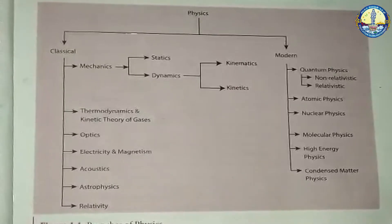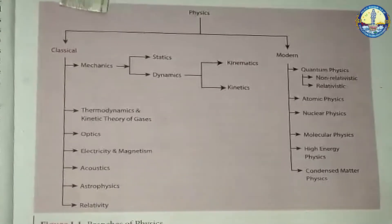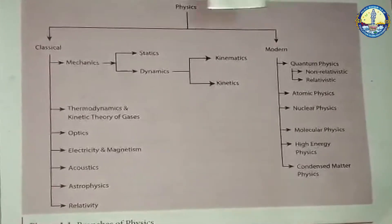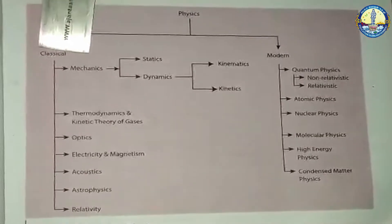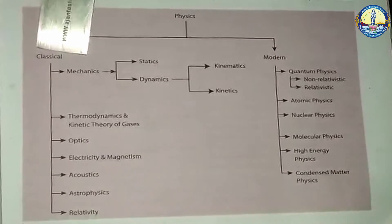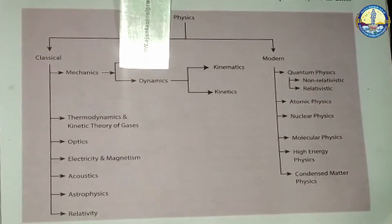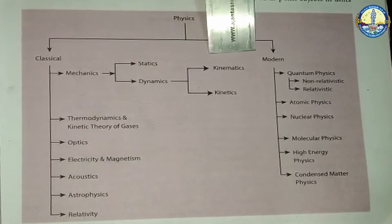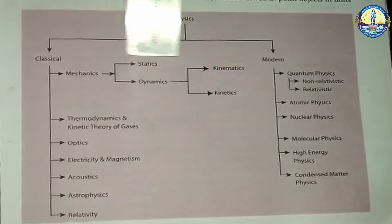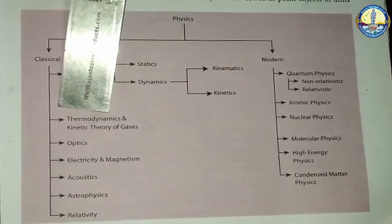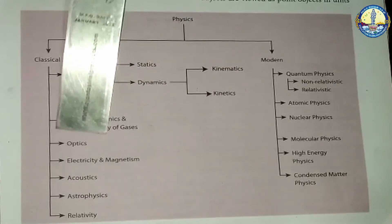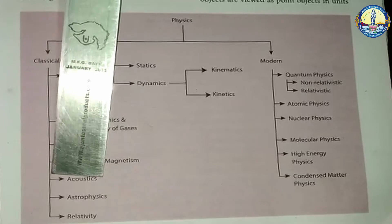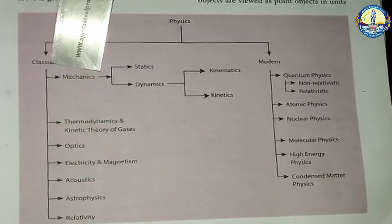The branches of physics are classified into classical and modern physics. Classical physics includes mechanics — which has statics, dynamics, and kinetics — as well as thermodynamics and kinetic theory of gases, optics, electricity and magnetism, acoustics, astrophysics, and relativity.